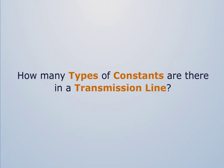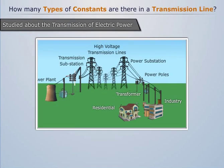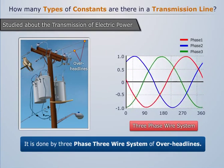How many types of constants are there in a transmission line? We have already studied about the transmission of electric power, and it has been discussed that it is done by 3 phase 3 wire system of overhead lines.